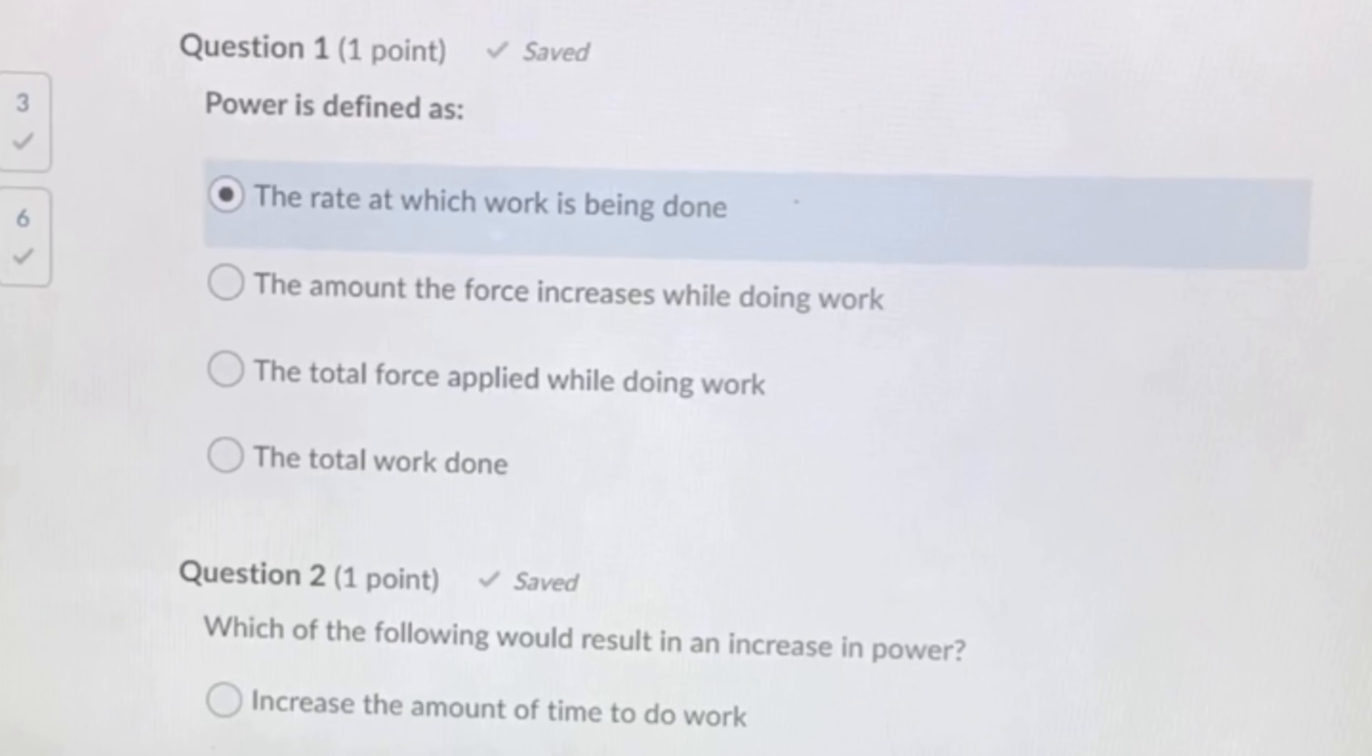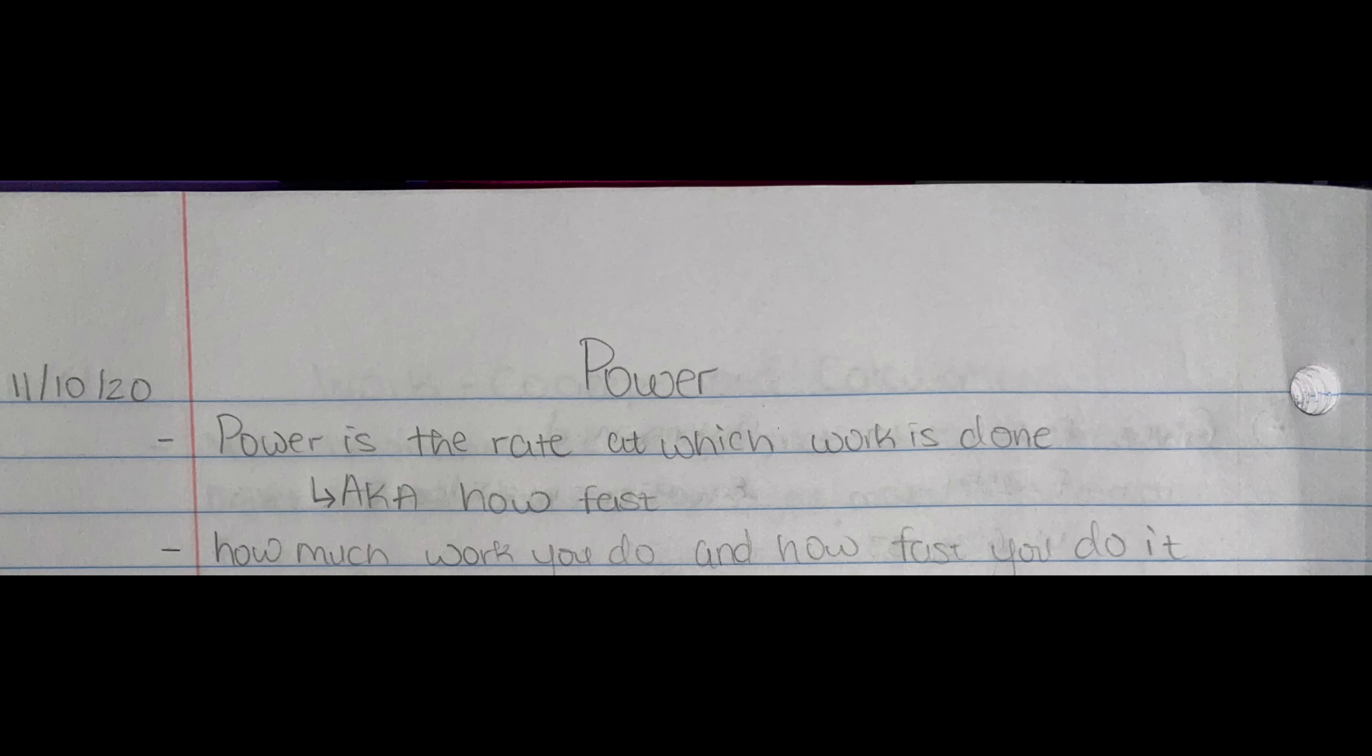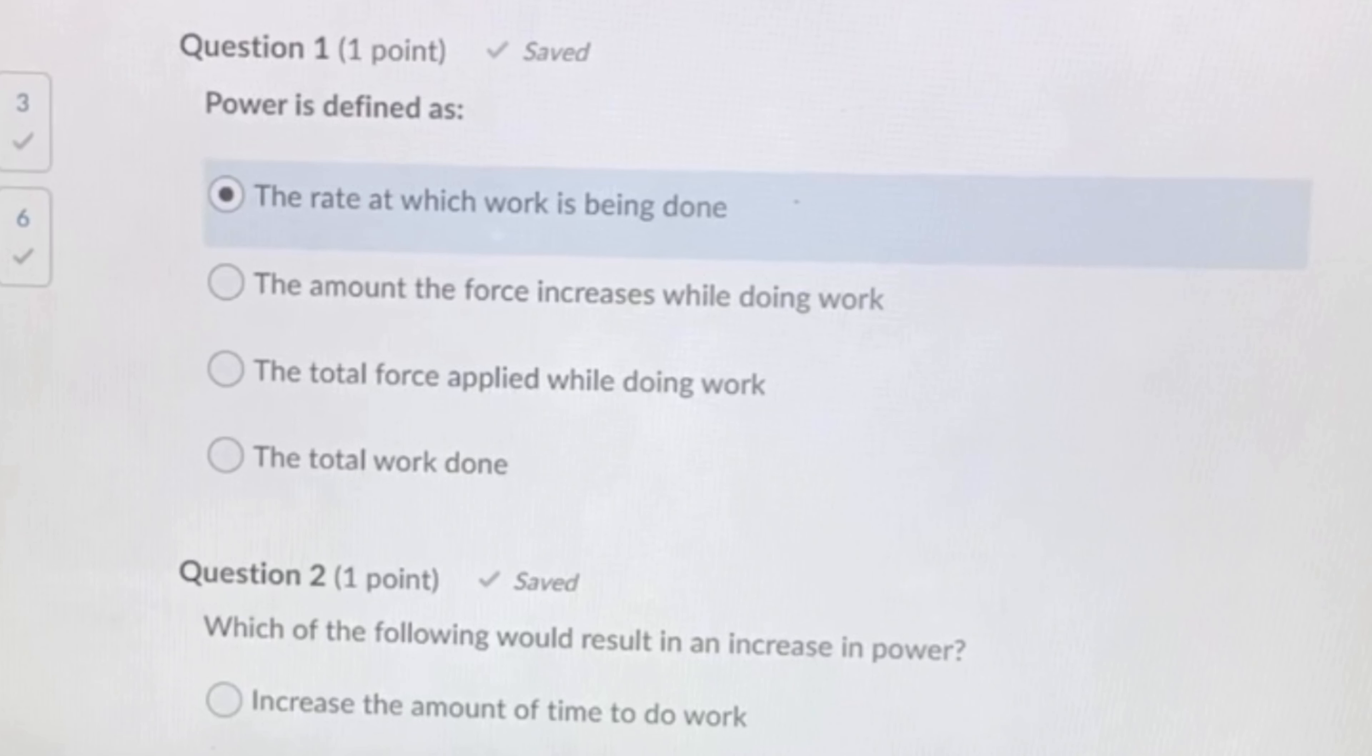The question wants to know how power is defined. Our four options were the rate at which work is being done, the amount of force increases while doing work, the total force applied while doing work, or the total work done. The only logical answer here would have been the rate at which work is being done. That was just part of the notes and it could also be defined as how fast the work is being done.